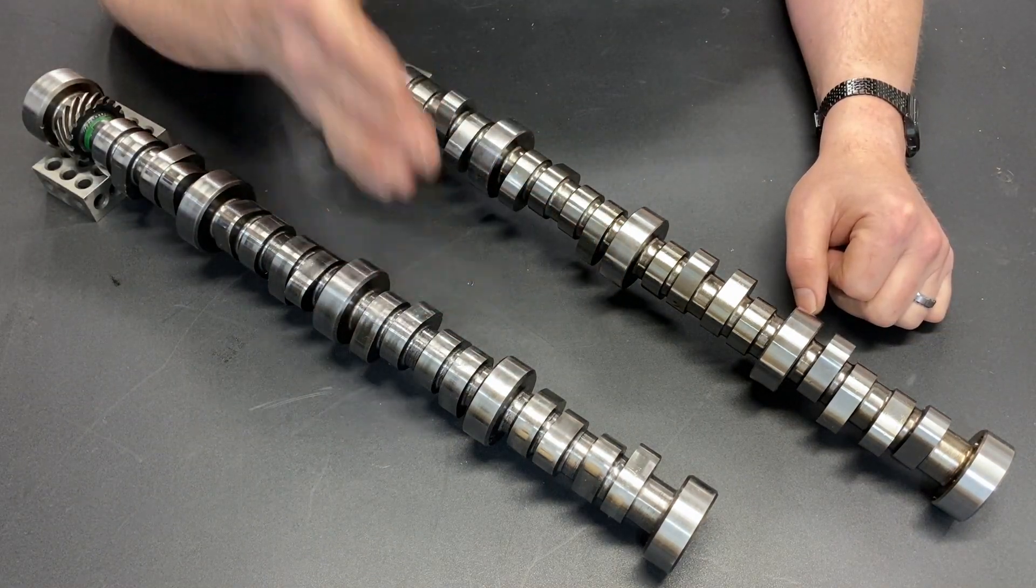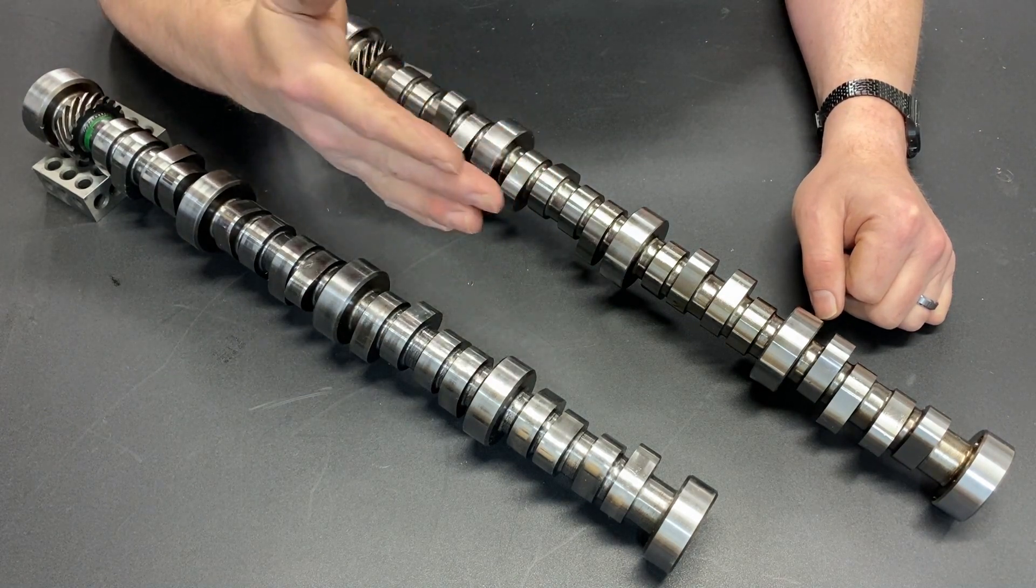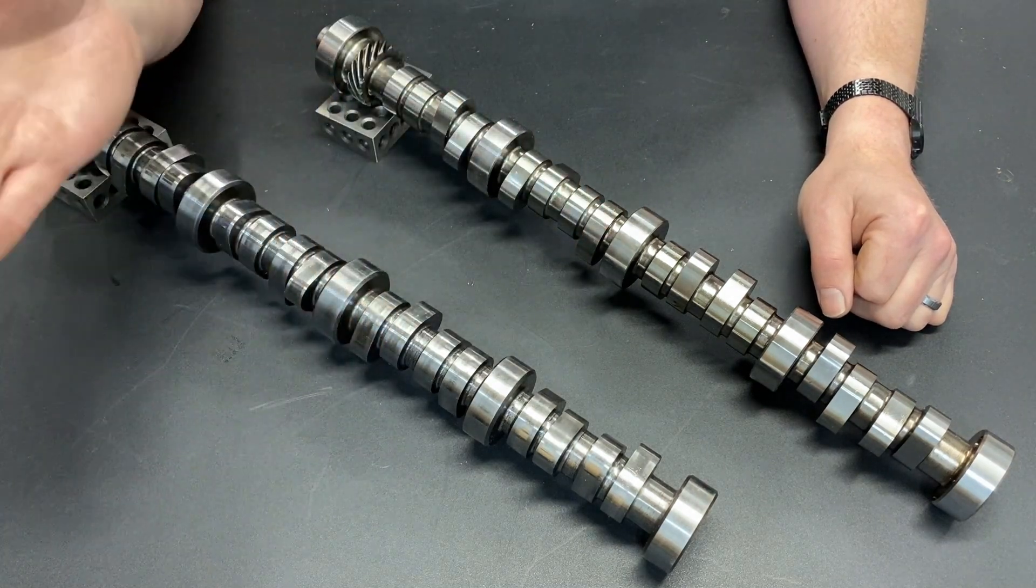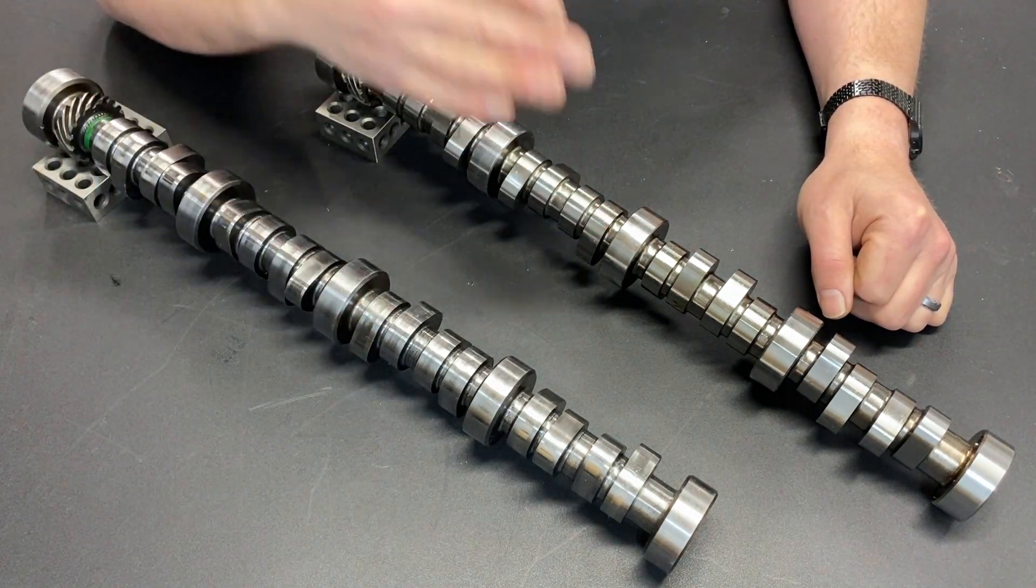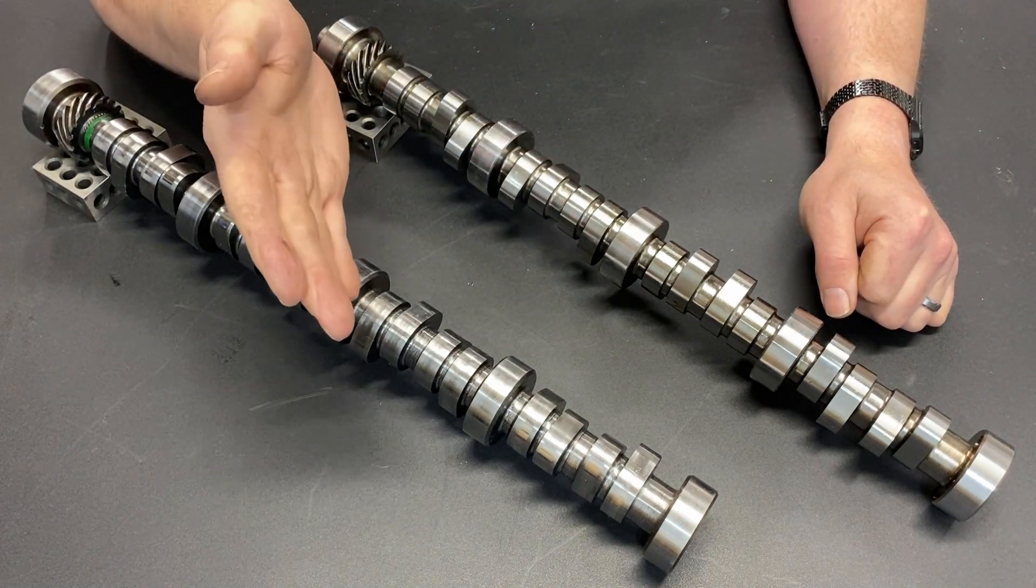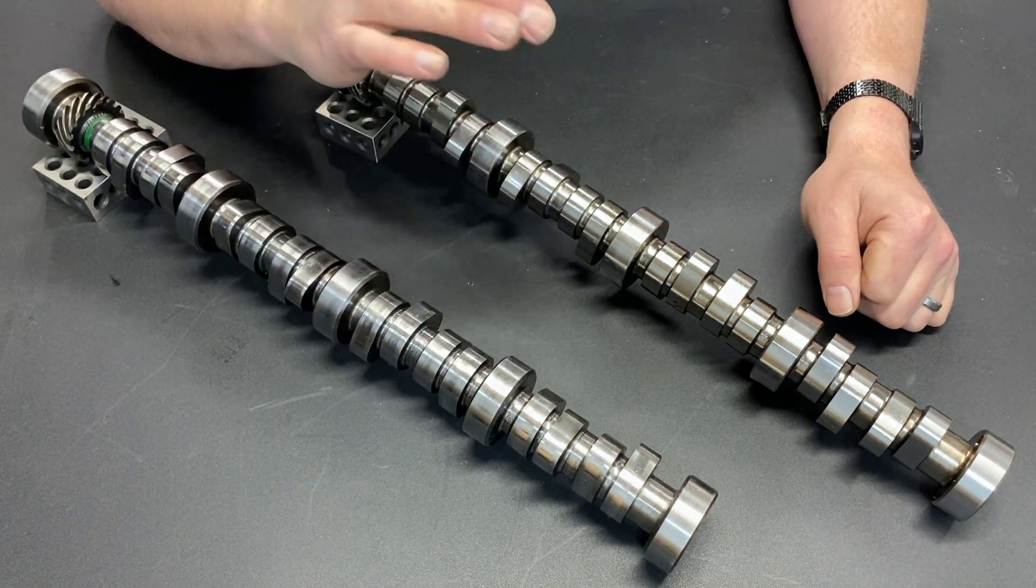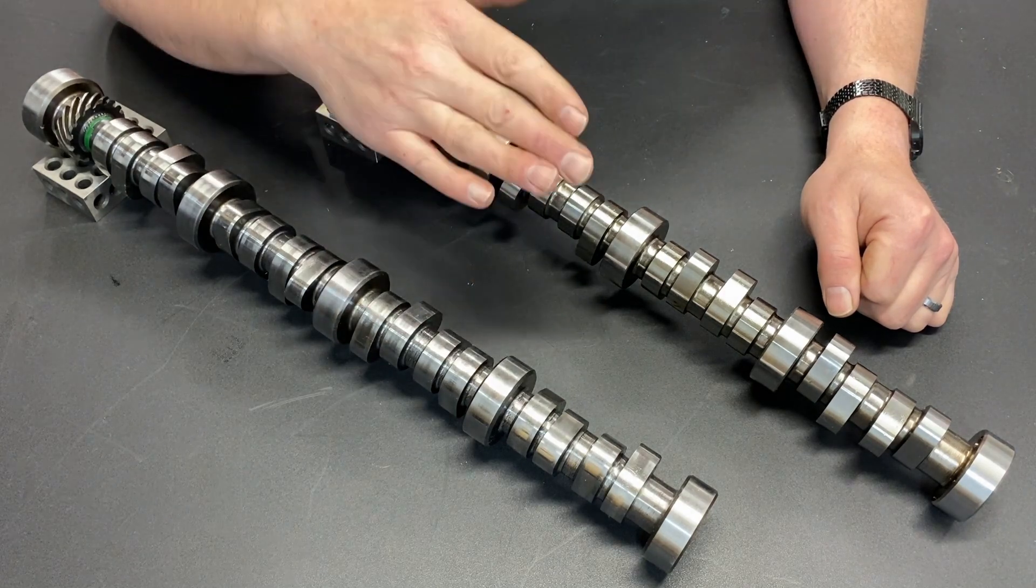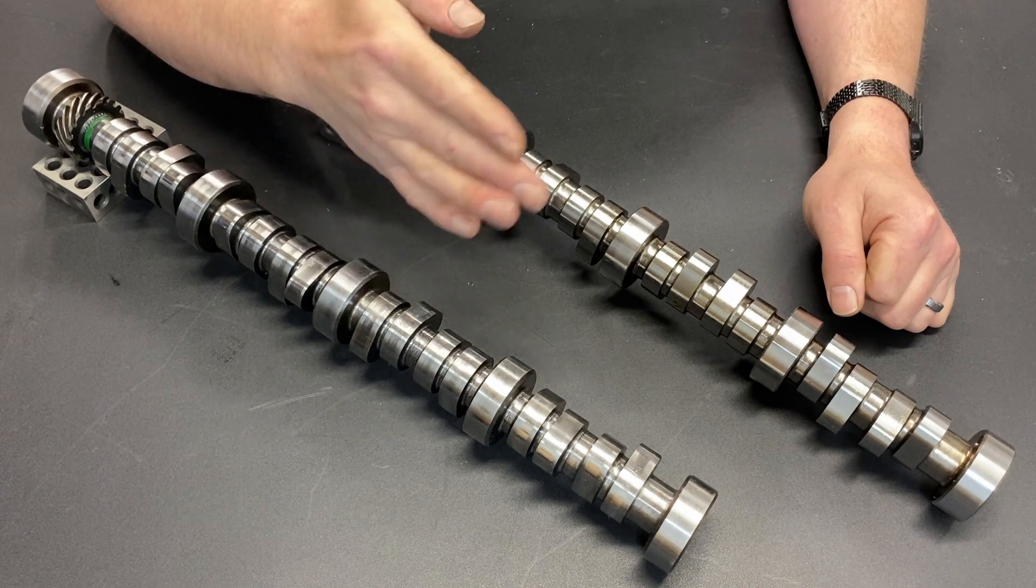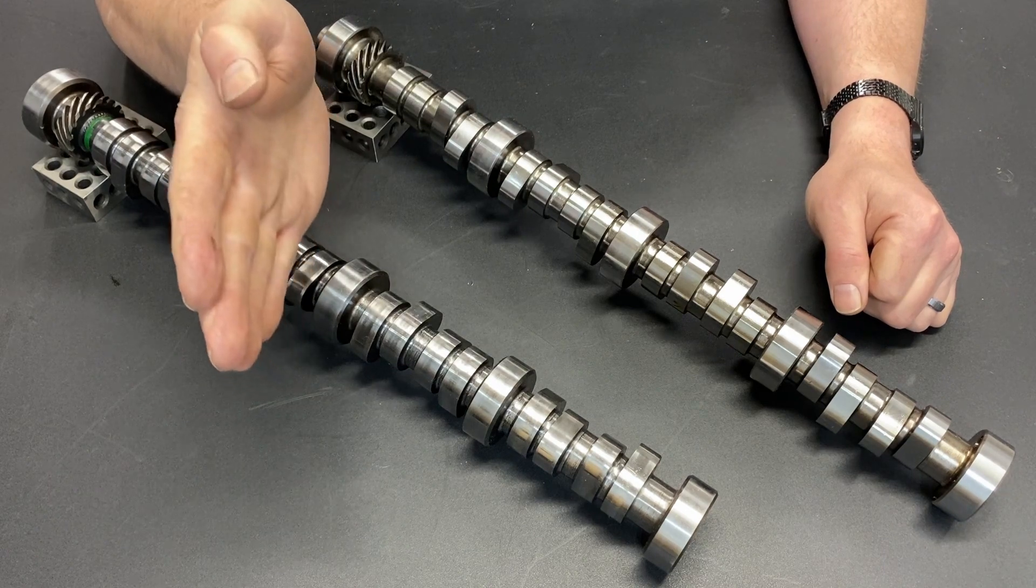Well, the first thing I looked at was lift. The heads that I'm using max out at 0.55. I also know from experience, both on forums and in real life, that the moment you start increasing your lift significantly more than 0.5 inches, everything else has to be upgraded. The rockers have to be super high quality. The valves typically need to be a little lighter. The springs have to be of the highest quality.